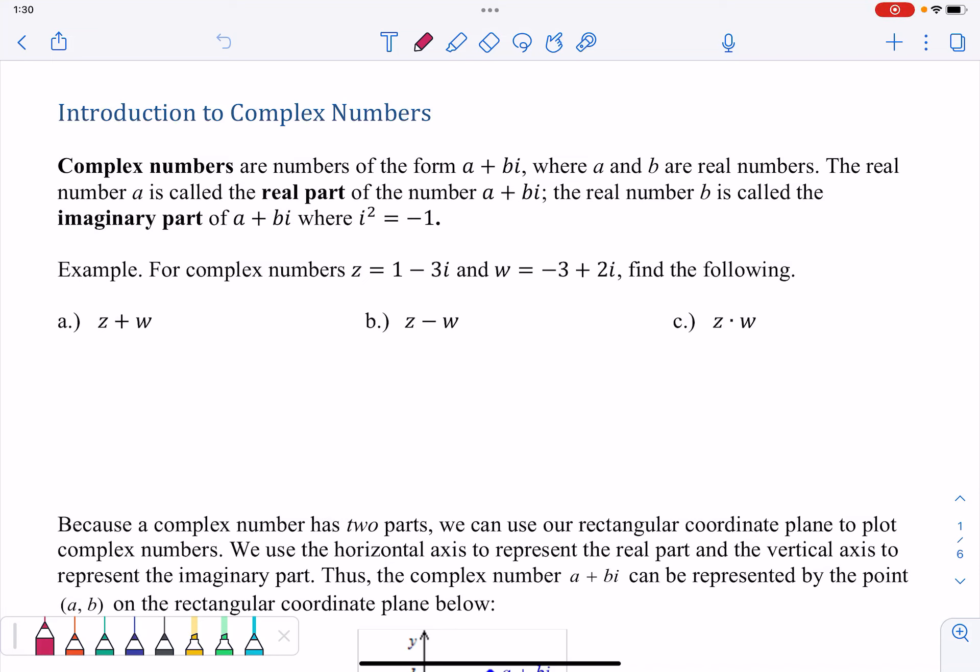An introduction to complex numbers. Complex numbers are numbers of the form A plus Bi, where A and B are real numbers.